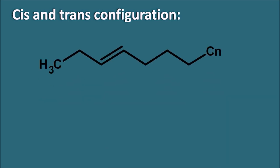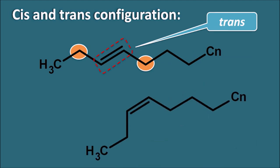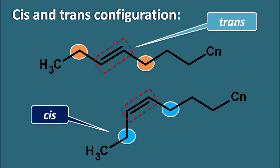Cis and trans configuration: whenever a double bond is present, the groups may have either cis or trans configuration. If the carbons attached to the double bond are on opposite sides, this is a trans configuration. If both carbons are on the same side of the double bond, this is a cis configuration. In fatty acids, double bonds may be present in trans or cis configuration, but in omega-3 fatty acids, all double bonds are present in the cis configuration.